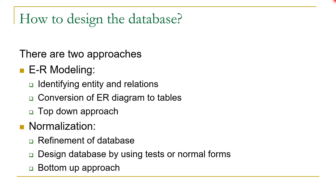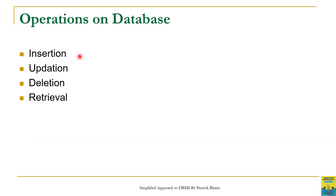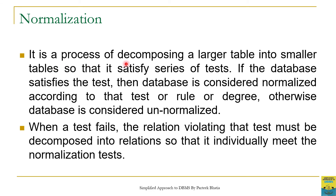In every database we have to perform four operations: insert, update, delete, and retrieve. Our objective is to perform these operations without any anomaly. But sometimes if we put every column in the same table, we may have issues with insert, update, delete, and retrieve. So in order to refine the database, we have the concept of normalization.